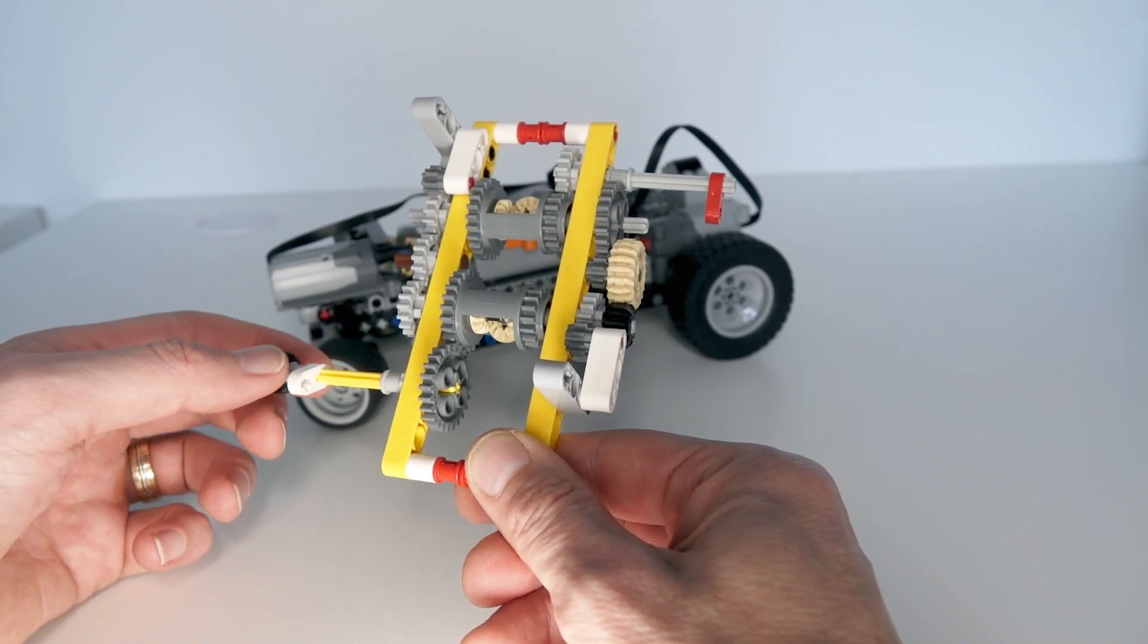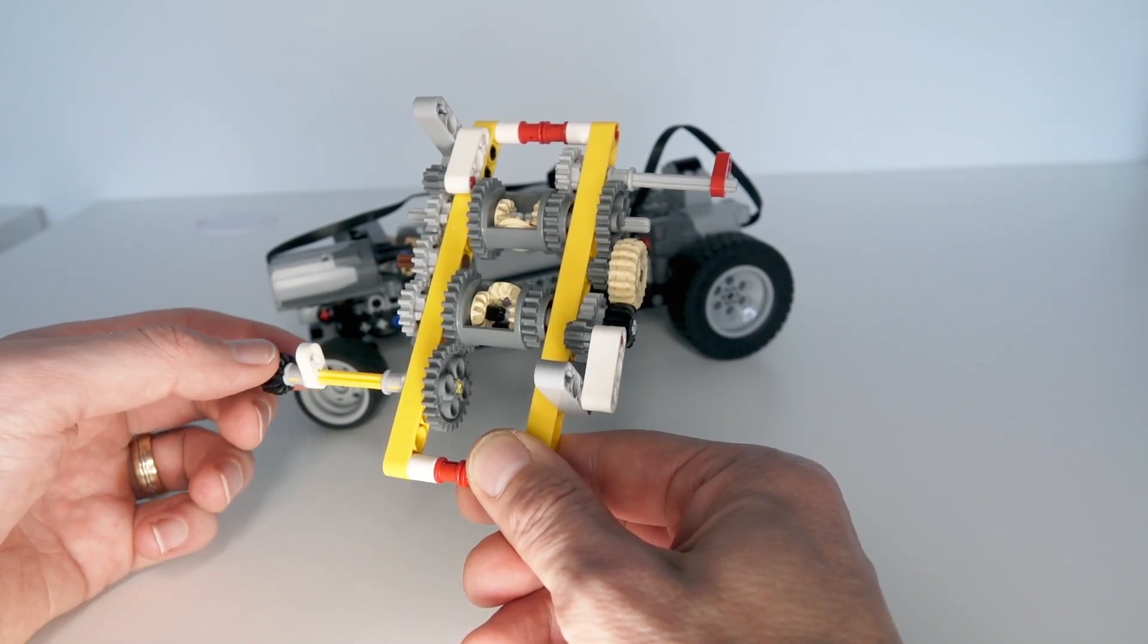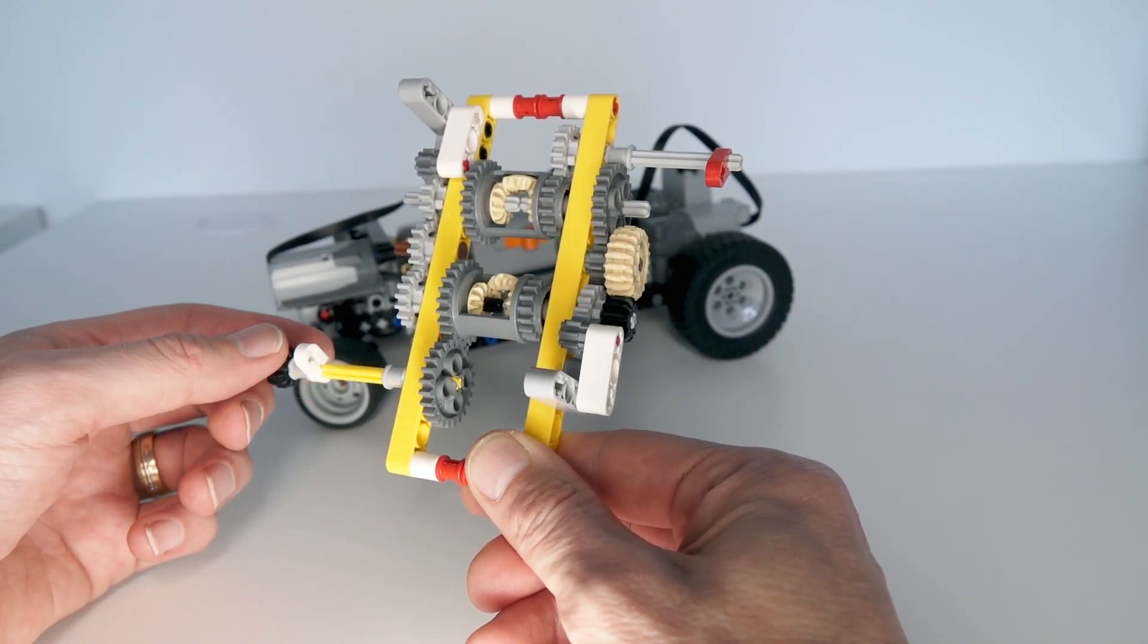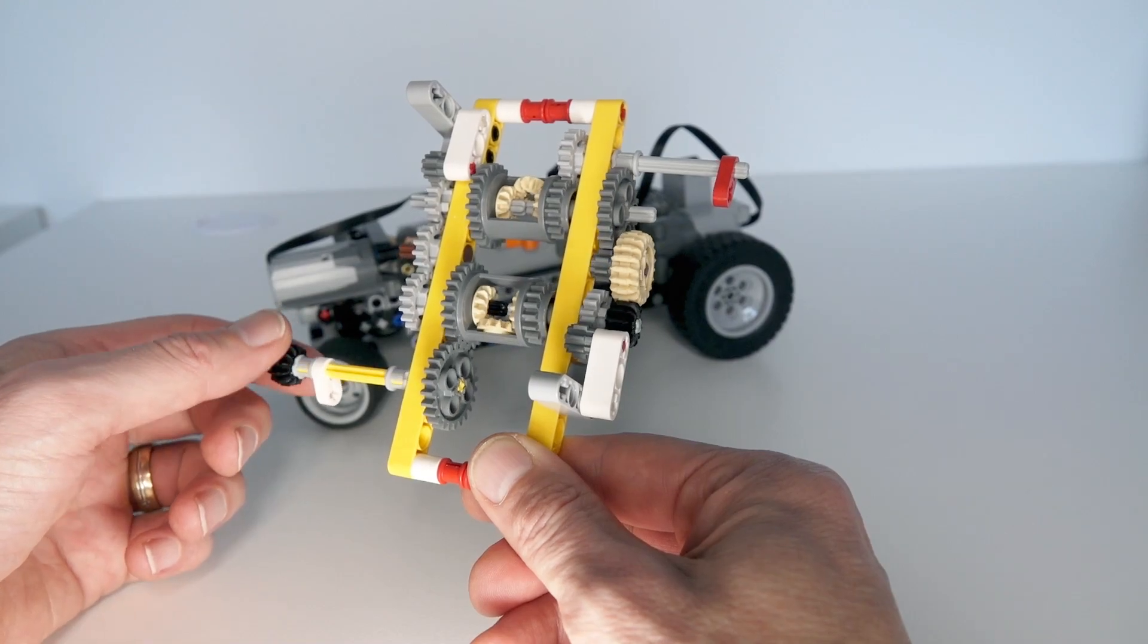So forwards it's one-to-one. Reverse it's one-to-five. And this was exactly the solution I needed to be able to create the chassis there in the background that can go fast forward and slow reverse.